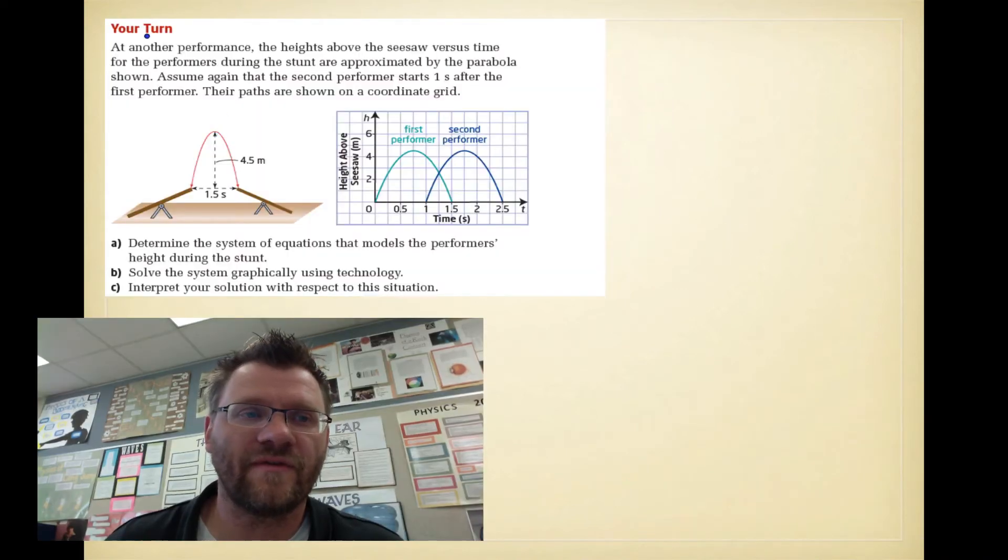Here's our final example. It says, at another performance, the heights above the seesaw versus time for the performers during the stunt are approximated by the parabola shown. So what they're saying in the textbook, they did an example already. There were two people, acrobats, that were jumping from one seesaw to the other. In the middle of the air, they would give each other a high five. The second performer is starting one second after the first performer. So where and when is that high five going to take place? They give you two parabolas here: the first performer and the second performer. This is the height compared to the time.